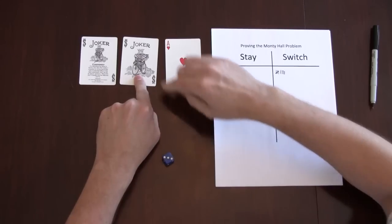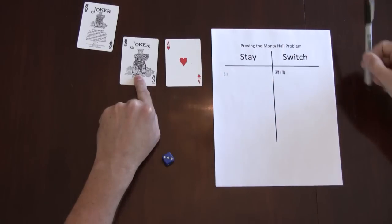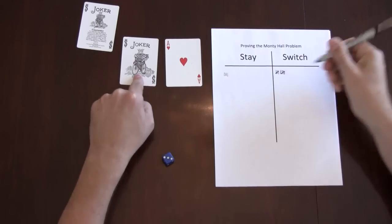In this case, I choose the middle door. Monty shows us the goat. In this case, again, if I switched, I would have gotten a car.